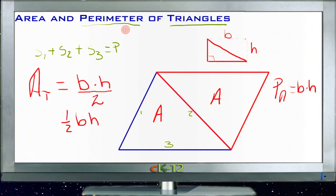So, the perimeter of a triangle is just the sum of the three sides, and the area of a triangle is base times height divided by 2. Let's play around with that a little bit with our example questions.